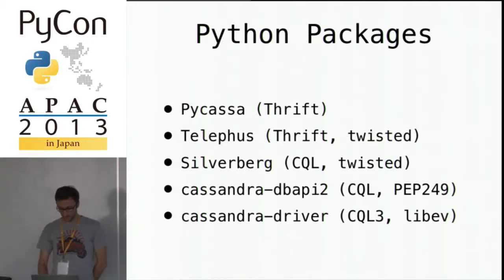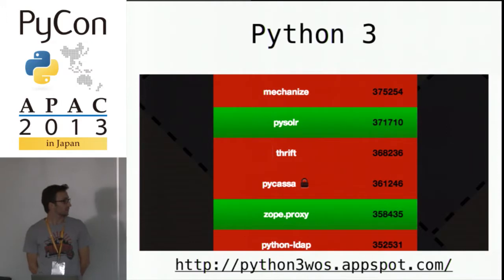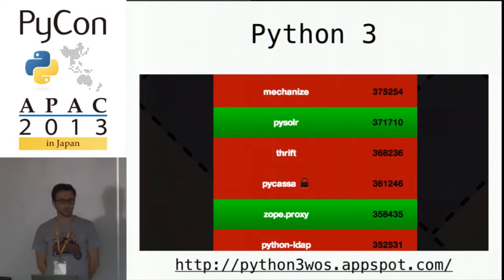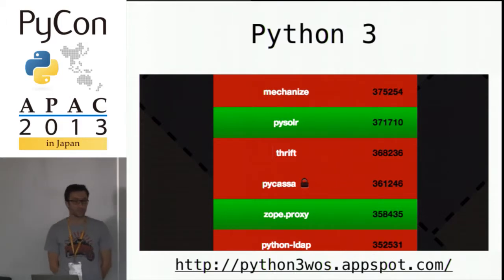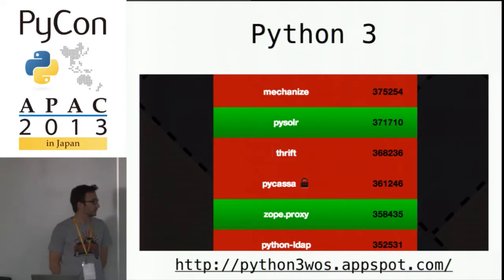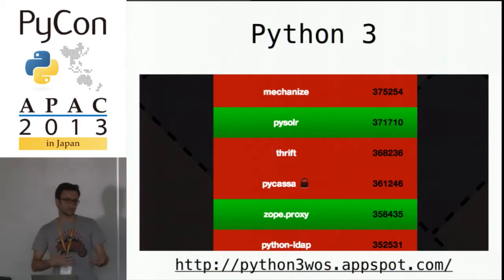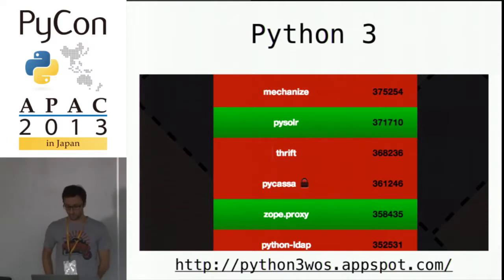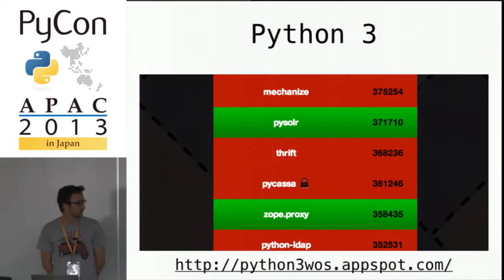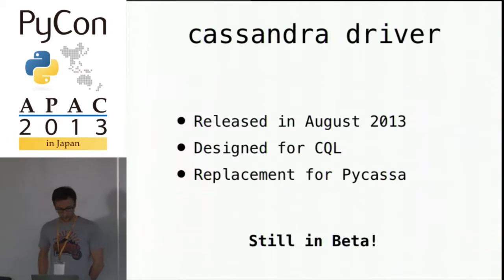Another reason for not talking about Pycassa is that it's not planned to support Python 3 anytime soon. One reason is that the Thrift library doesn't support Python 3 yet, and since Pycassa is not looking toward the future of Cassandra, all the Thrift interfaces will be maintained for backward compatibility. It's better to look at the future, which is the Cassandra driver.